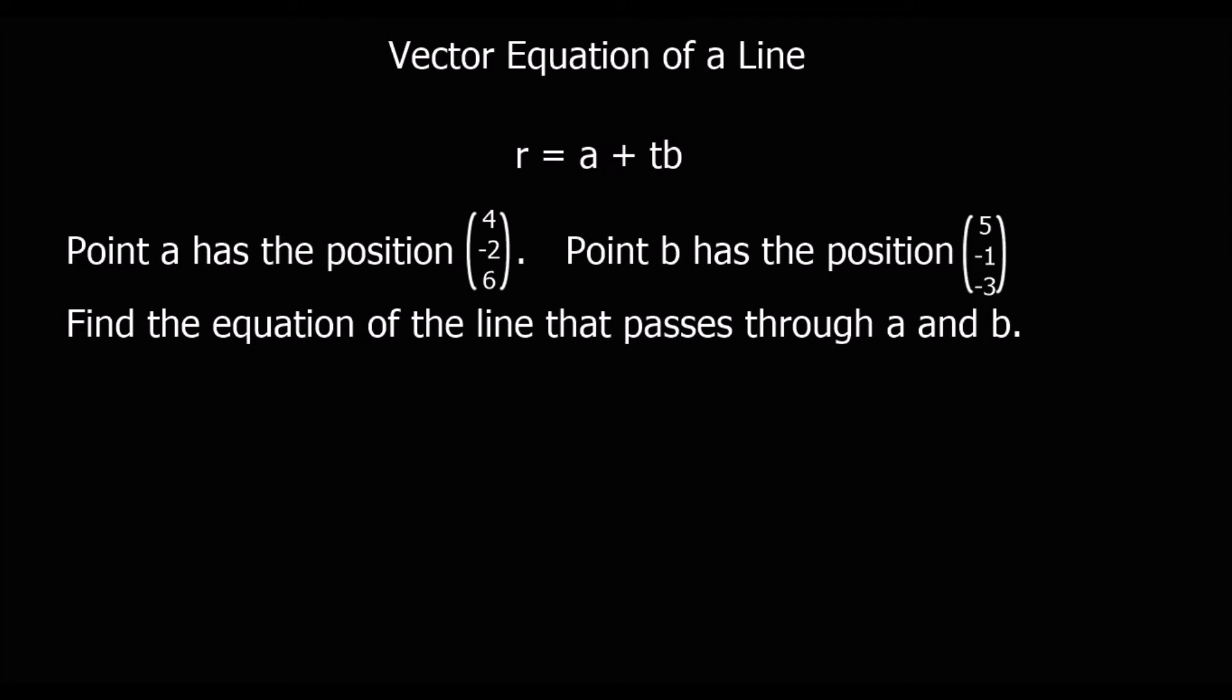OK, so same thing again. We're going to work out our a, work out our b, and substitute them in. So for a we can pick either of these two position vectors, so we'll have (4, -2, 6) plus t times the direction. And the direction is either a to b or b to a, it doesn't matter which one we use. So if we work out a to b, which would be b take away a.